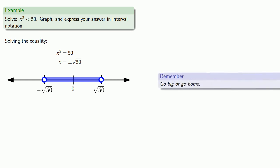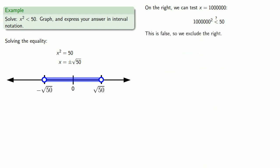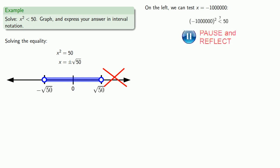On the right, we can go big or go home. We can test x equals one million. This is false, so we exclude the right interval. On the left-hand side, we can test x equals minus one million, substituting that into our inequality. We get a false statement, so we exclude the left side.